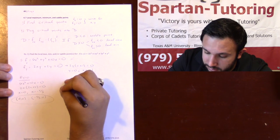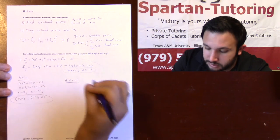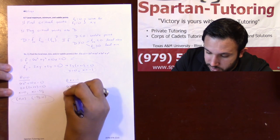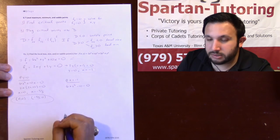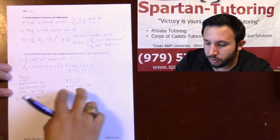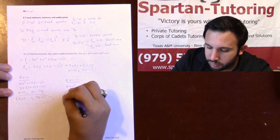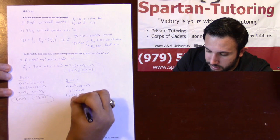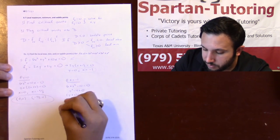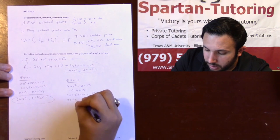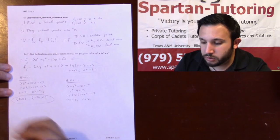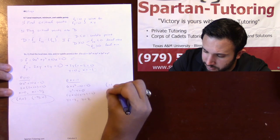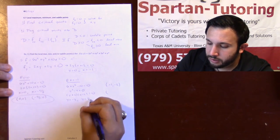Now at x equals negative one: plug negative one into fx. You get 6 plus y squared minus 10 equals zero, which simplifies to y squared minus 4 equals zero. Factoring gives (y plus 2)(y minus 2) equals zero, so y equals negative two and y equals positive two. When x equals negative one we get two more critical points: (−1, −2) and (−1, 2).